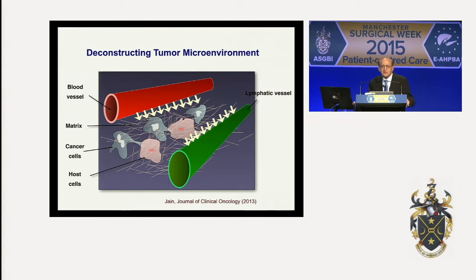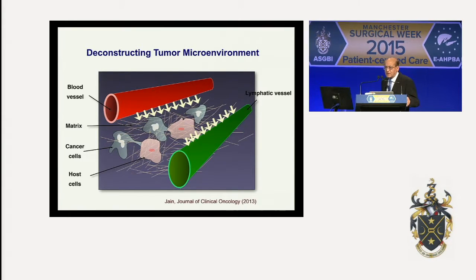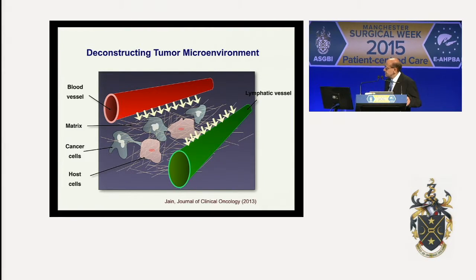Our laboratory has been looking at a tumor as an organ for nearly four decades. This organ is made of cancer cells, nourished by blood vessels formed by the process of angiogenesis, and drained by lymphatic vessels. All these cells are embedded in an extracellular matrix made out of collagen or hyaluronic acid. In addition, there are host cells including fibroblasts, myofibroblasts, stellate cells, resident immune cells such as myeloid cells and macrophages, and transiting immune cells such as T cells.